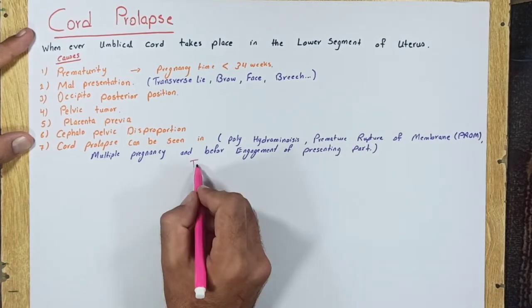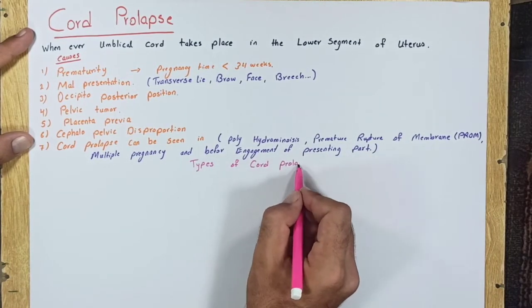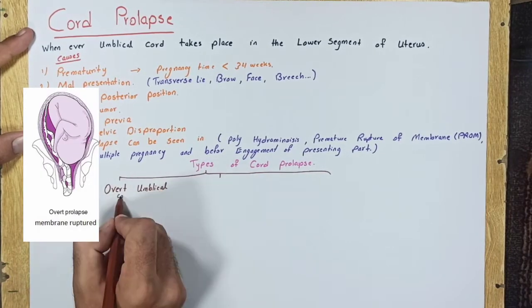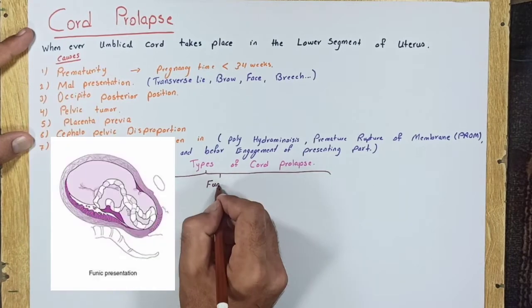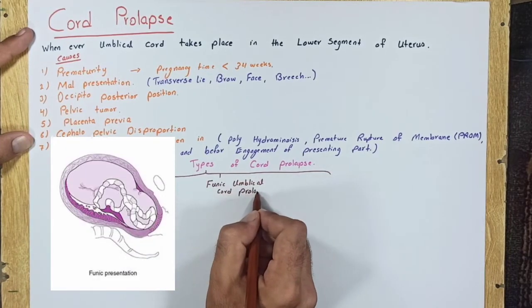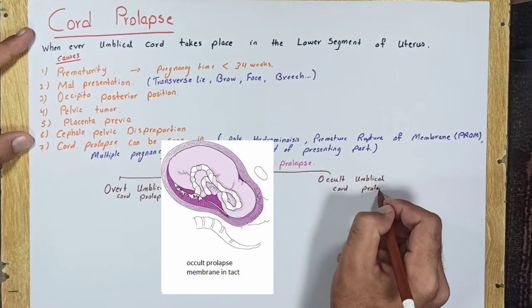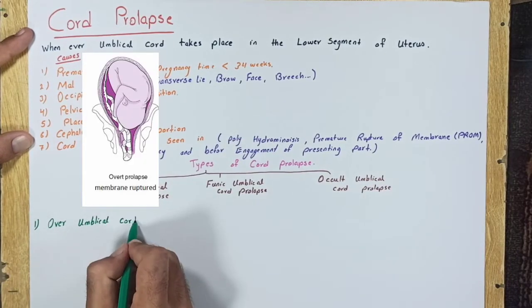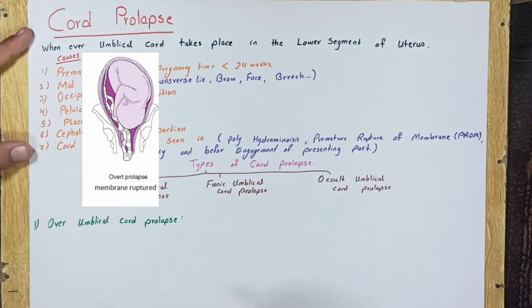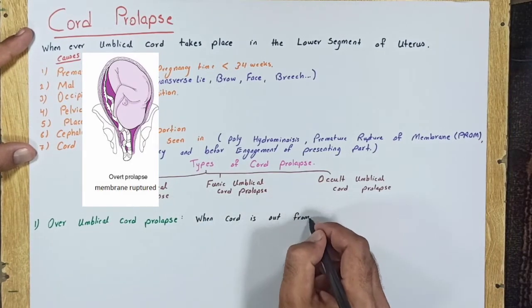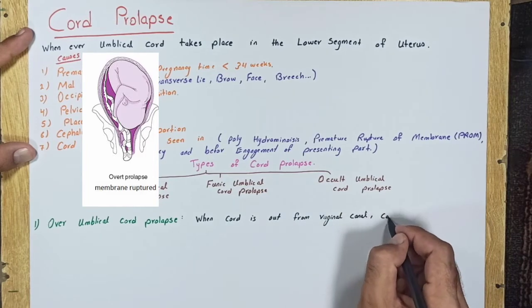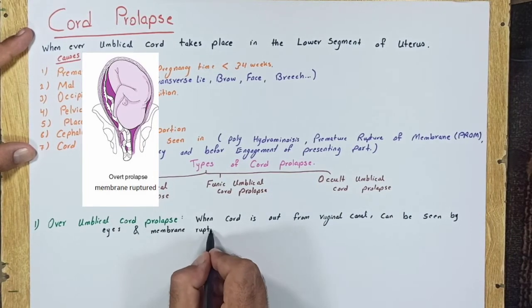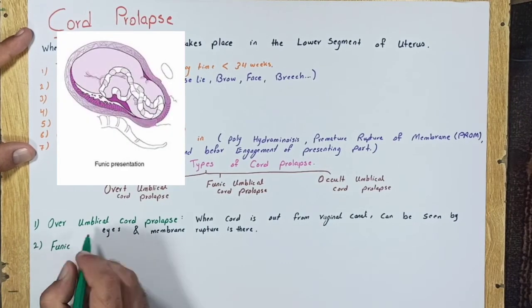Types of cord prolapse: There are three types of cord prolapse - overt umbilical cord prolapse, funic umbilical cord prolapse, and occult umbilical cord prolapse. The first one is overt umbilical cord prolapse, when cord is out from vaginal canal and can be seen by eyes and membrane rupture is also there.